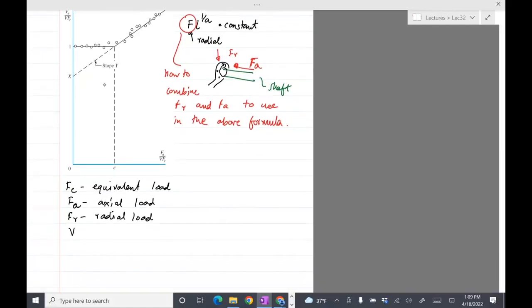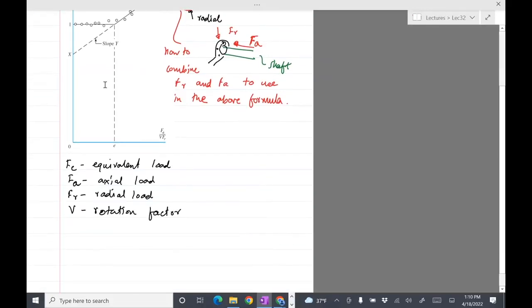FA is the axial load and FR is the radial load. So we'll define a factor V, and that V is called the rotation factor. 1 and 1.2. 1 you'll use if inner ring rotates, and if the outer ring rotates, then you'll use V equals 1.2.